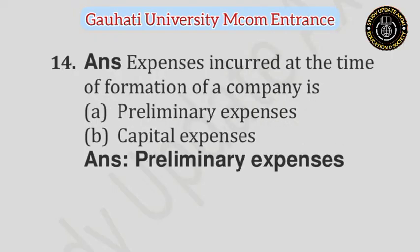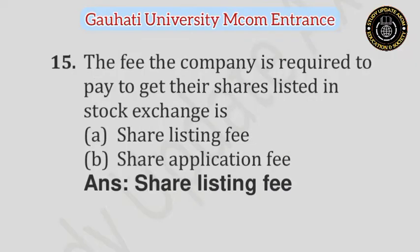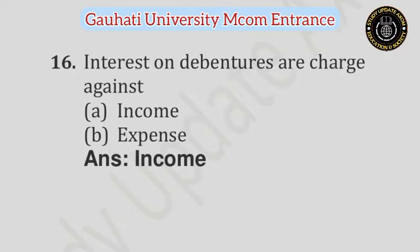Question number 14: Expenses incurred at the time of formation of a company is — Option A: Preliminary Expenses, Option B: Capital Expenses. Answer is Preliminary Expenses. Question number 15: The fee the company is required to pay to get their shares listed on the stock exchange is — Option A: Share Listing Fee, Option B: Share Application Fee. Answer is Share Listing Fee. Question number 16: Interest on dividends are charged against — Option A: Income, Option B: Expense. Answer is Income.